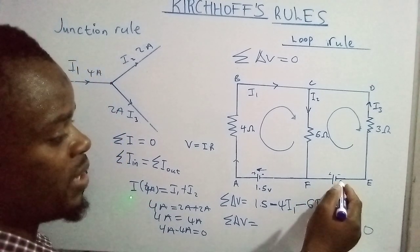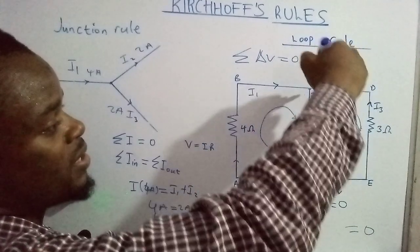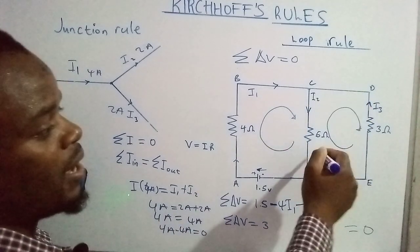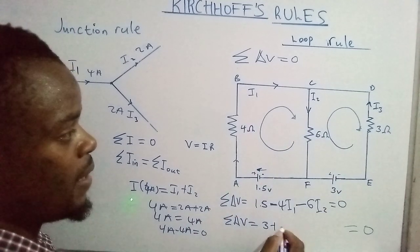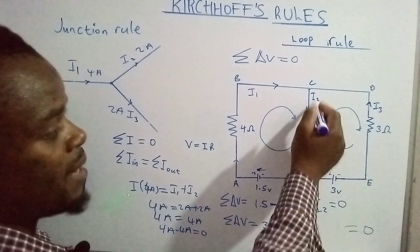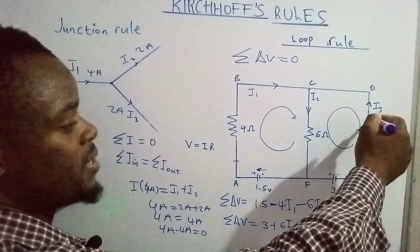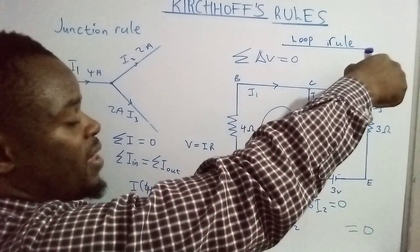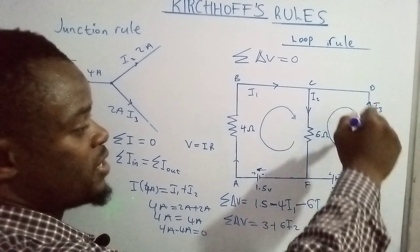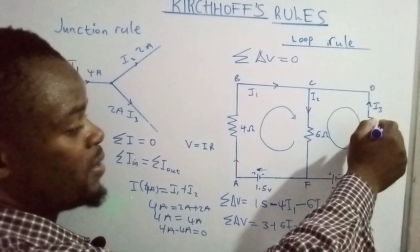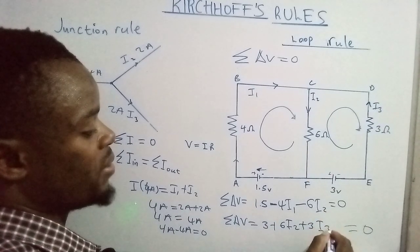For the second loop, we are moving from the negative terminal to the positive terminal, so that gives us positive 3 V. We check the current direction: we are traversing this component in the opposite direction of the current, so that gives a positive potential rise — positive 6 times current two. Then across the next component, also in the opposite direction of current, we get positive 3 times current three. That sum equals zero.